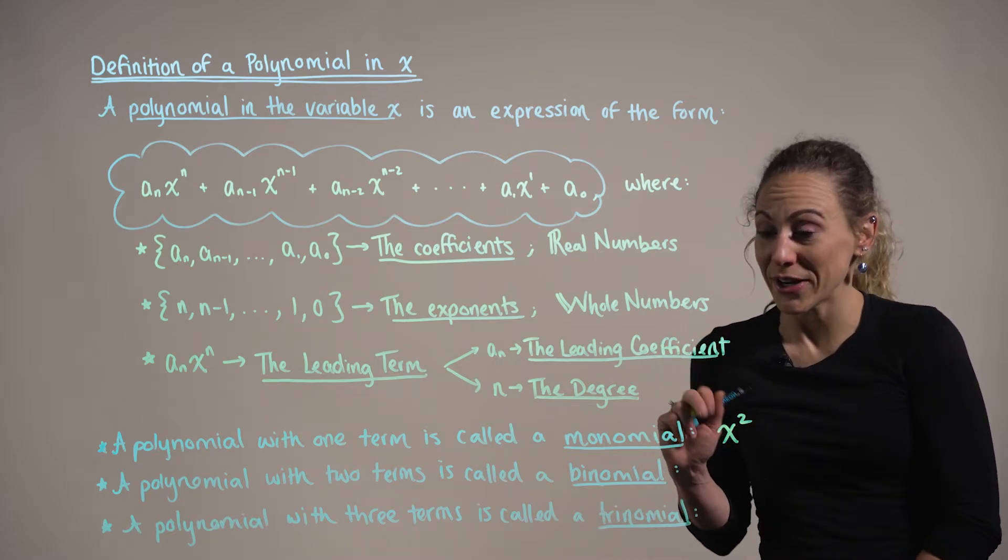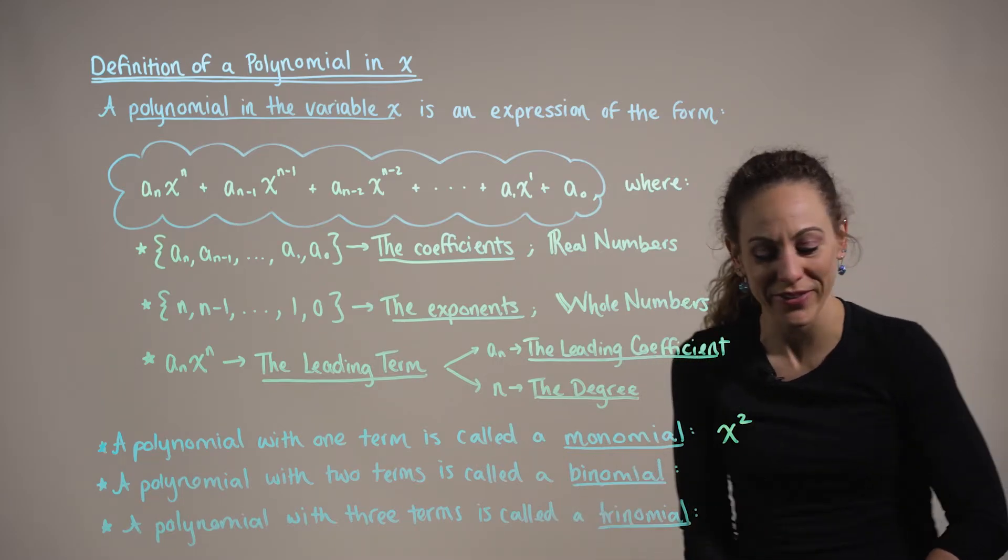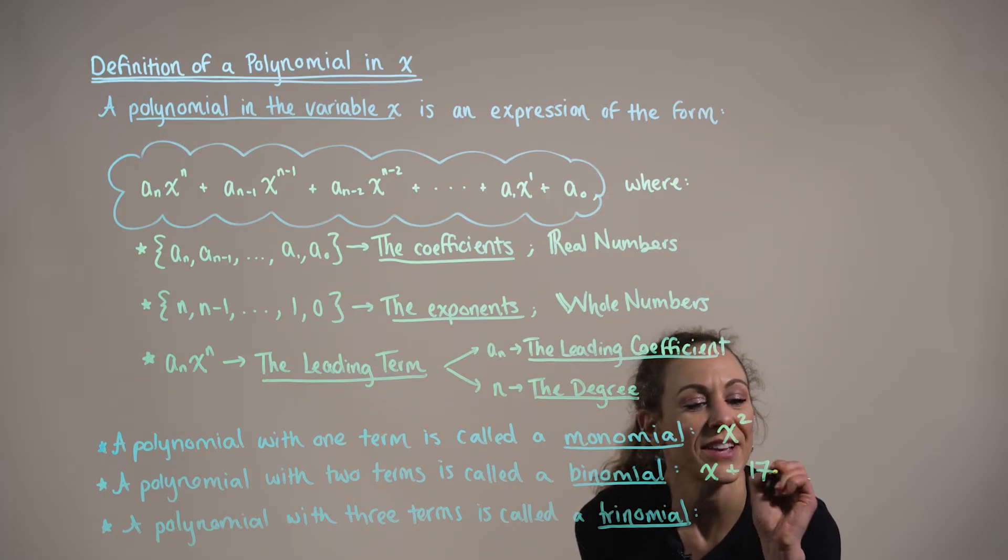When a polynomial has two terms, we refer to it as a binomial. For example, x plus 17.